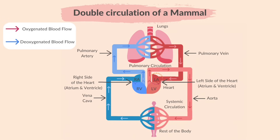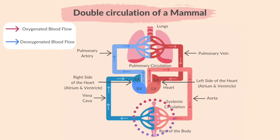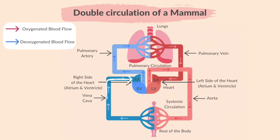Then oxygenated blood enters the left atrium via the pulmonary vein, then moves to the left ventricle. Oxygenated blood is pumped by the left ventricle to the rest of the body. The aorta carries this oxygenated blood away from the heart. Body cells use the oxygen and cause the blood to become de-oxygenated. The de-oxygenated blood returns to the heart and the cycle repeats.